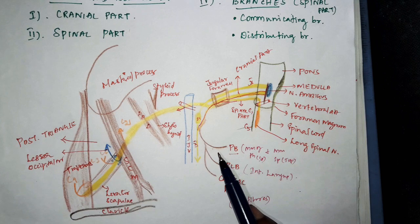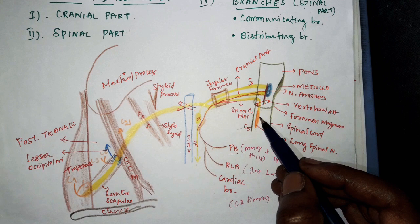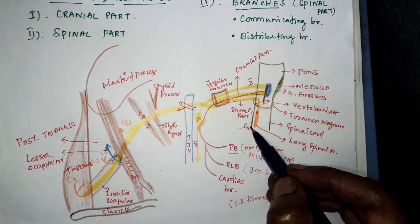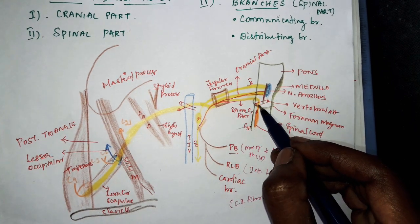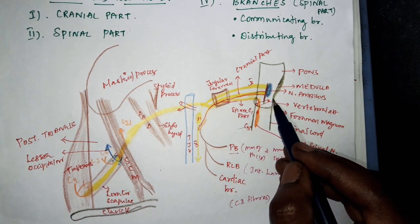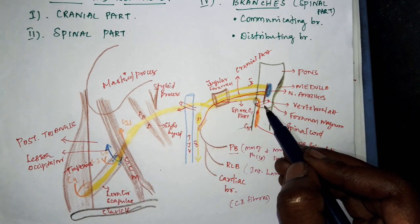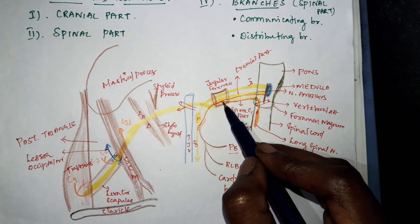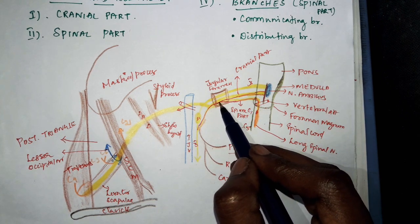Next is the course and distribution of the spinal part. The spinal part takes origin from the long spinal nucleus, extending from C1 to C5 spinal segments. After its origin, it runs upward and laterally, passing through the foramen magnum — through which the medulla continues down as the spinal cord — just beneath the fourth part of the vertebral artery.